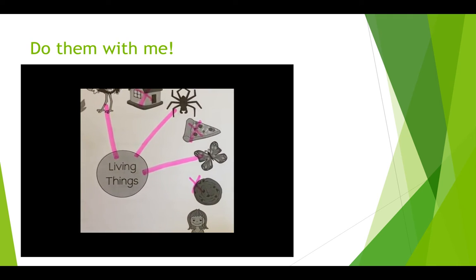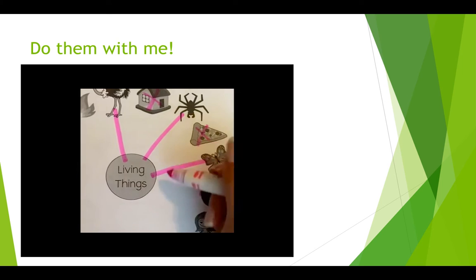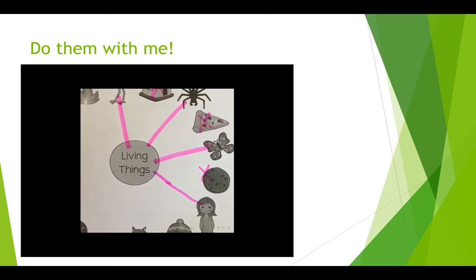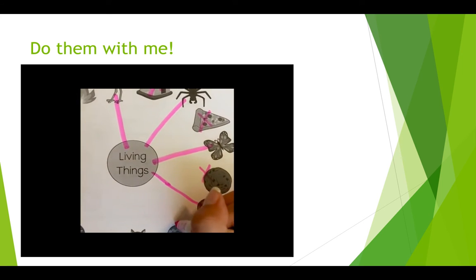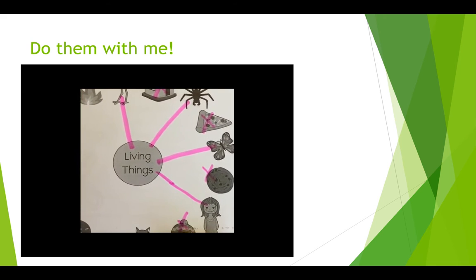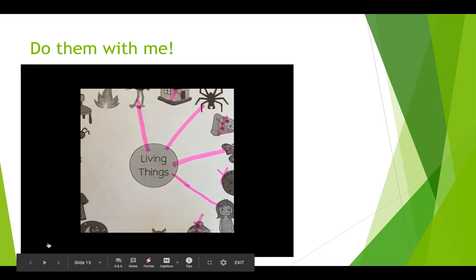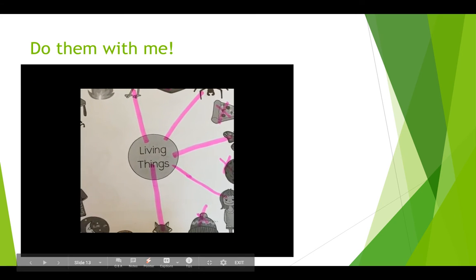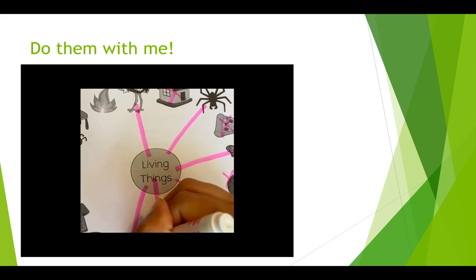And then what about this little girl? Does she eat, breathe, grow, and move and make more? Yes. So we're going to make a line from here to the little girl. And what about this hat? Does the hat eat, breathe, move, grow, or reproduce? No. So we're going to put an X on the hat — that makes it non-living. And then we go to the fox. Does the fox eat, breathe, move, grow, or reproduce? Yes. So we're going to make a line to the fox. What about the snail? Does he eat, grow, move, and make more snails? Yes. So we put a line there.